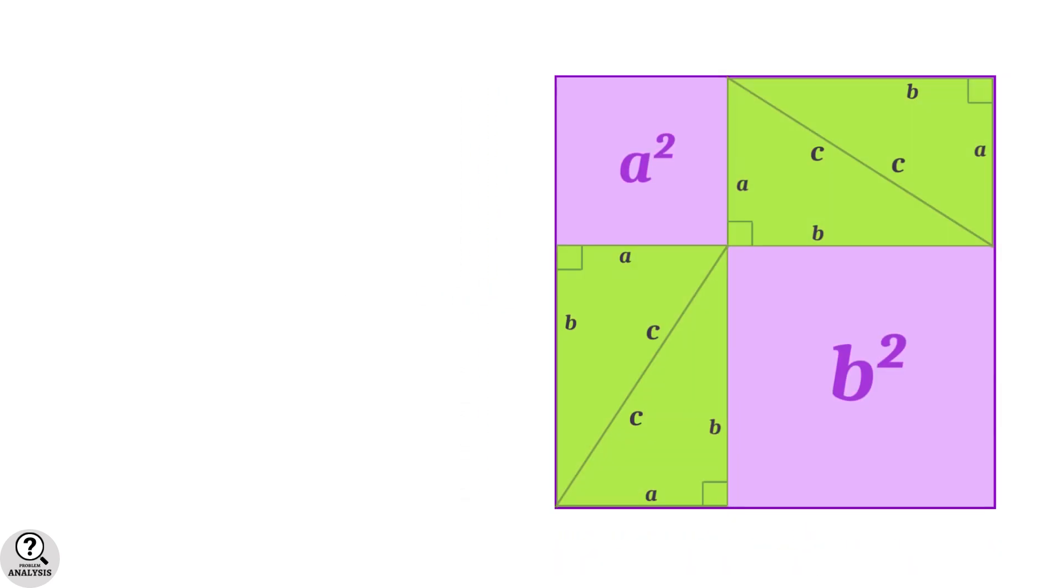Now, in this larger square, what is the total area of non-triangular region? It is a² + b². Now, I am doing a small trick.